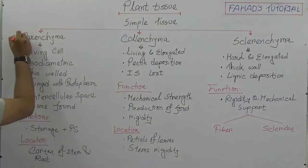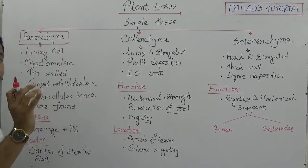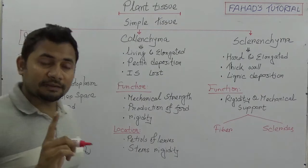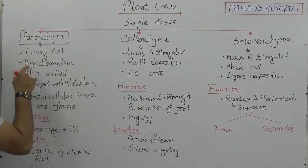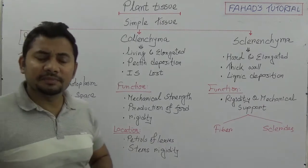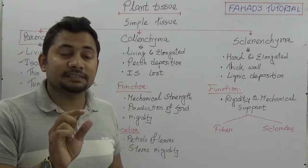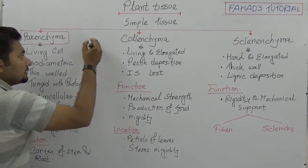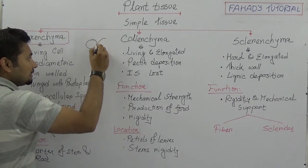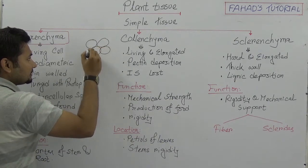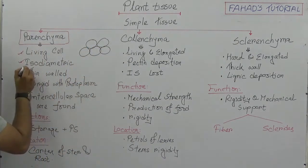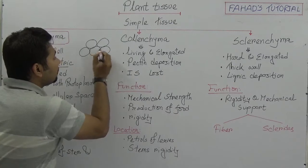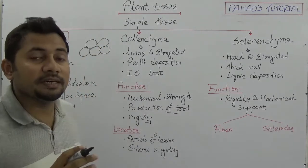Starting with parenchyma: parenchyma cells have some identifying characteristics. First, they are living cells. Second, they are isodiametric, meaning the diameter of the cells can be oval, hexagonal, or even polygonal. The cells are isodiametric — 'iso' means same and 'diametric' comes from the word diameter — so the diameter of the cells are the same.